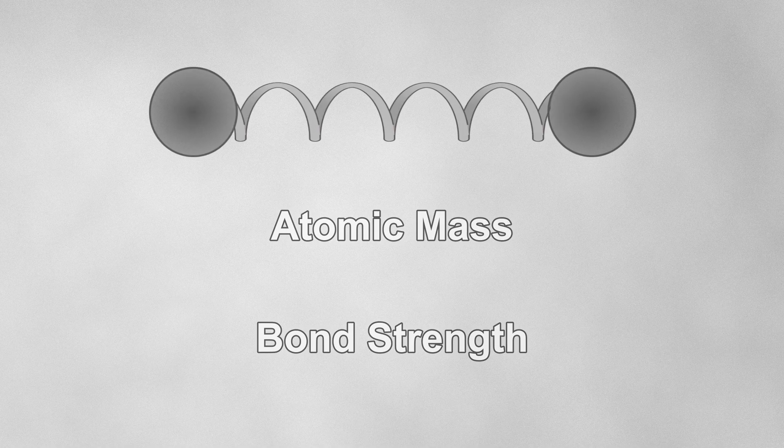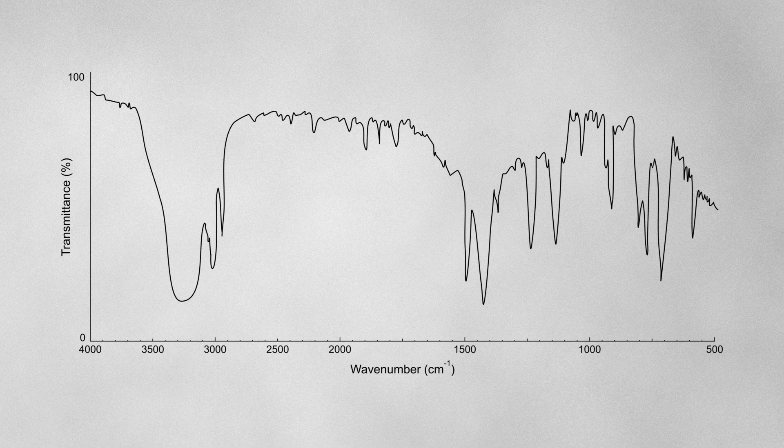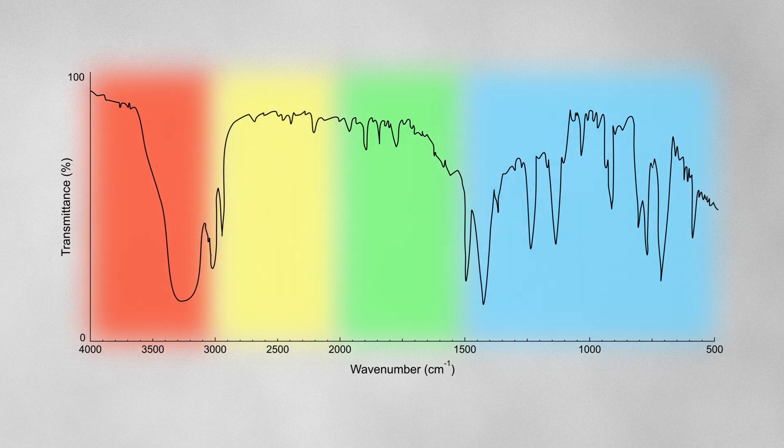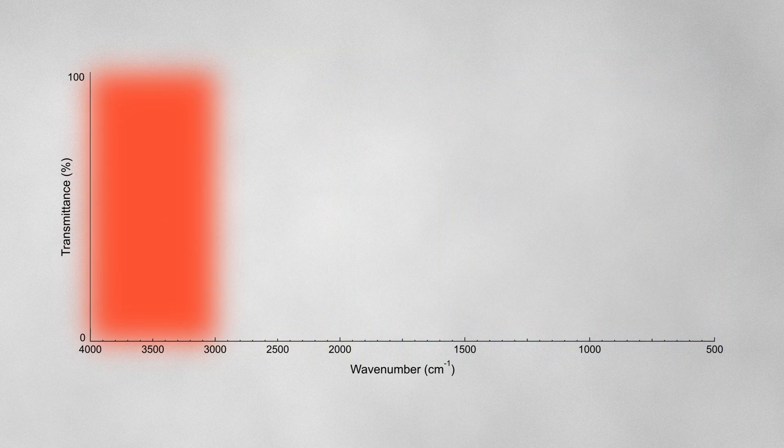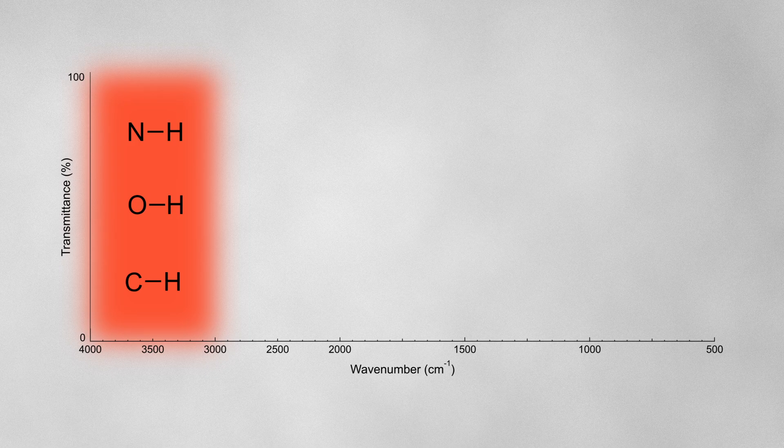So, the atomic mass and the bond strength both influence the frequency of the absorption. For this reason, an IR spectrum can be very roughly split into four sections. Absorptions in the region 4000 to 3000 are typically due to bonds to hydrogen. This is because hydrogen is the lightest element, and as we know, lighter atoms result in higher frequency vibrations.